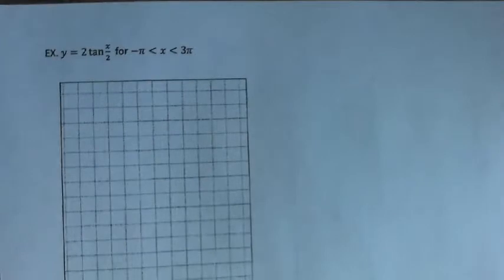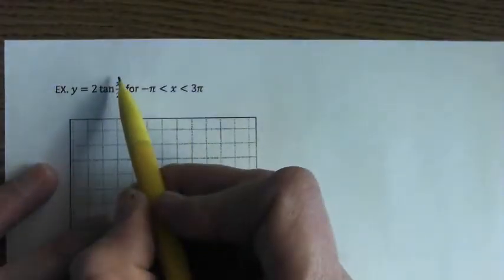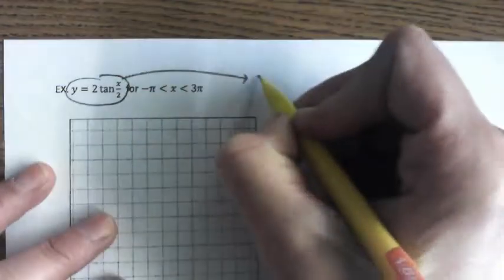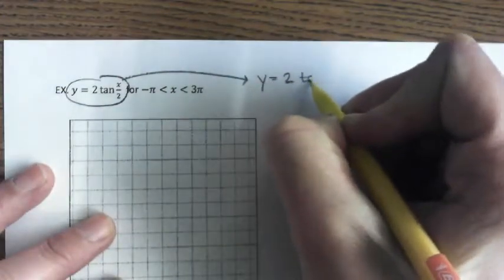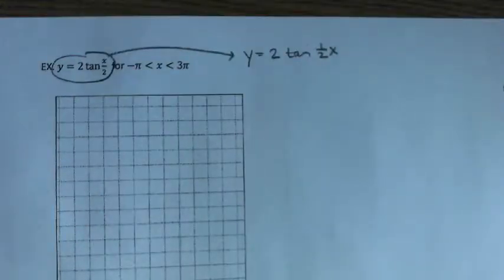What's on the back? Excellent. Okay. So we have a function with some transformations. Y equals two times the tangent of, this is technically one half x. I know for some people it's easier to see that.